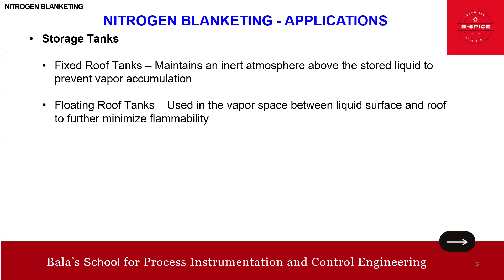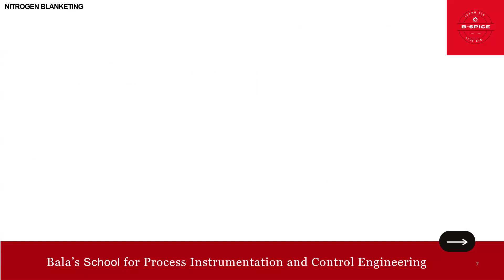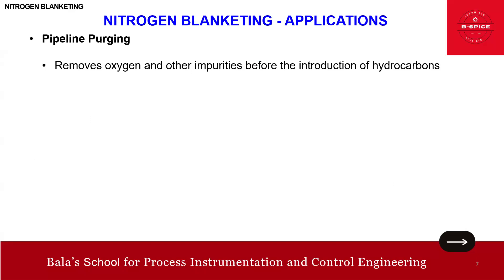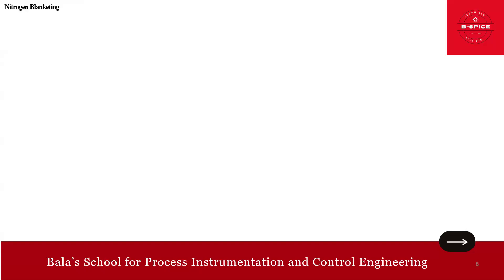In reactor systems, nitrogen provides an inert environment for reactions sensitive to oxygen or moisture. For pipeline purging, it removes oxygen and other impurities before the introduction of hydrocarbons — this is very common. During loading and unloading operations, nitrogen prevents flammable vapor-air mixtures from forming during product transfer.